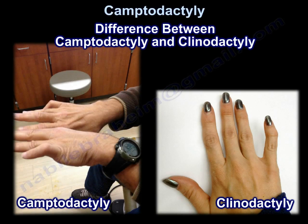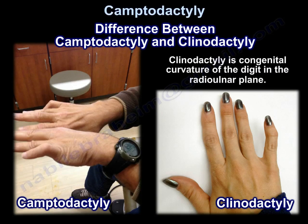Here you can see clinodactyly to the left with flexion of the PIP joint, while you can see the curving of the finger. Clinodactyly is a congenital curvature of the digit in the radioulnar plane.